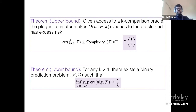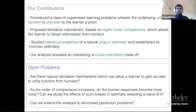In our analysis we uncover an interesting accuracy-elicitation trade-off. As the order K of the oracle increases, the error decreases at rate 1/K as seen from the upper bound theorem. However, increasing K makes it harder for the human to provide accurate responses. By varying K, one can cover an entire spectrum of this trade-off. To conclude, our work formalizes a class of supervised learning problems wherein the underlying utility function is unknown to the learner a priori, and we study a natural plug-in estimator and show it's minimax optimal.